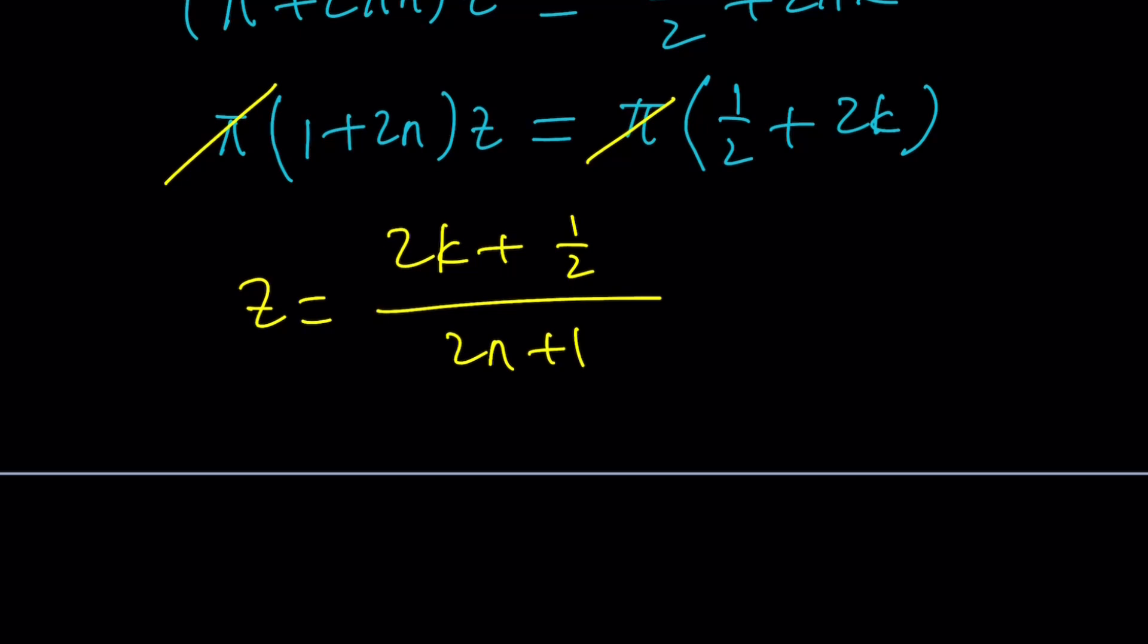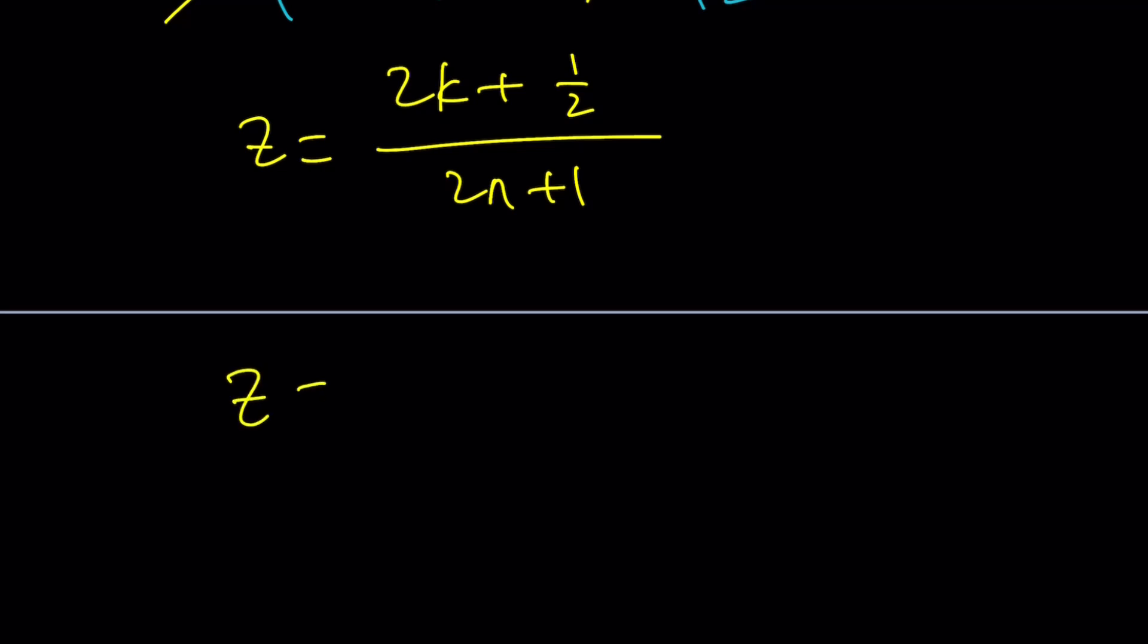Obviously multiplying the top and bottom by 2 would actually be a good thing so let's do it. We get 4 k plus 1 divided by 4 n plus 2. Uh-oh an interesting scenario right?